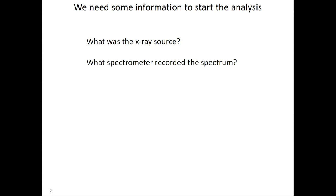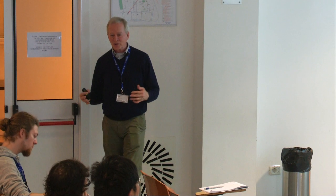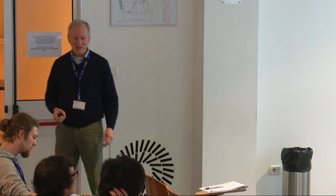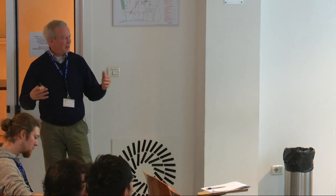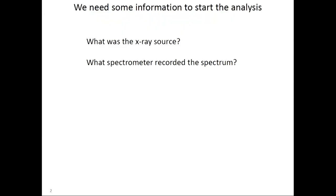One thing we need to know is: what is the X-ray source? You're a computational physicist sitting back in your office, someone walks in and hands you this spectrum and says, tell me what's in this spectrum. So one of the first things you would ask is: what is the X-ray source? What materials were in the X-ray source — was it copper, krypton, tungsten? And secondly, what spectrometer recorded that spectrum? What are the properties and capabilities of that spectrometer?